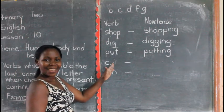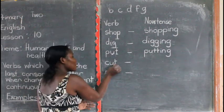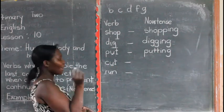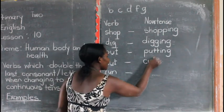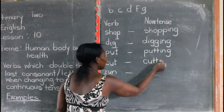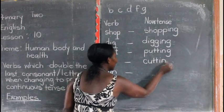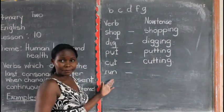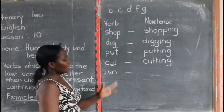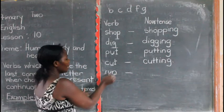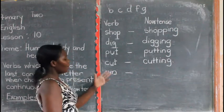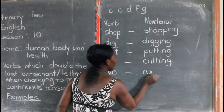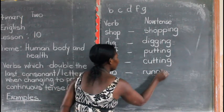We have 'cut.' The last letter is a consonant letter near one vowel letter. You double the last one and add I-N-G — so 'cut' becomes 'cutting.' We also have 'run.' The last letter is a consonant letter near one vowel letter. When you are changing it, we say 'running.' You double the N.